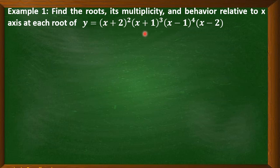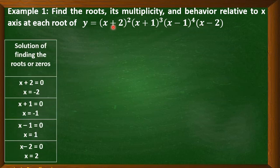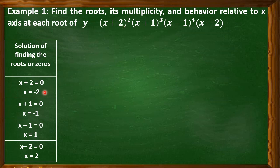Each factor will be equated with 0 to solve for the roots. For the first factor, (x+2)², we write x+2 = 0. Do not write the exponent outside the grouping symbol, because if we expand it, we come up with the same answer. The only difference is that this factor will have the same root, which is negative 2, and it will appear twice — that's why its multiplicity is 2.